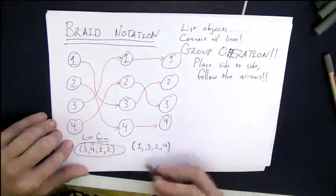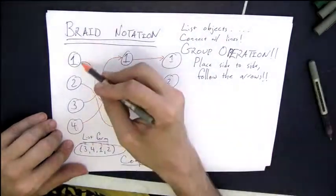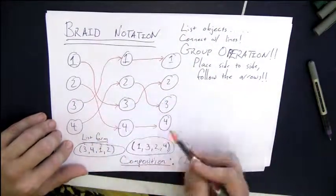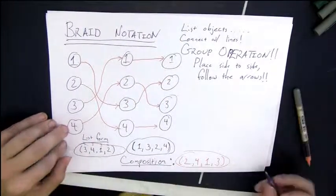So here, if I put these side to side and just follow the arrows from start to end, I see one goes to two, two goes to four, three goes to one, and four goes to three. So it's a composition.